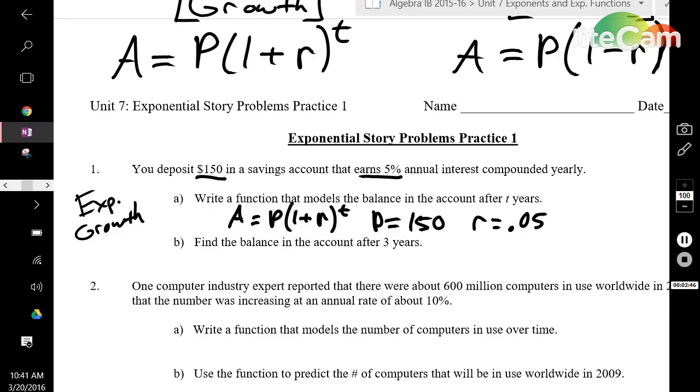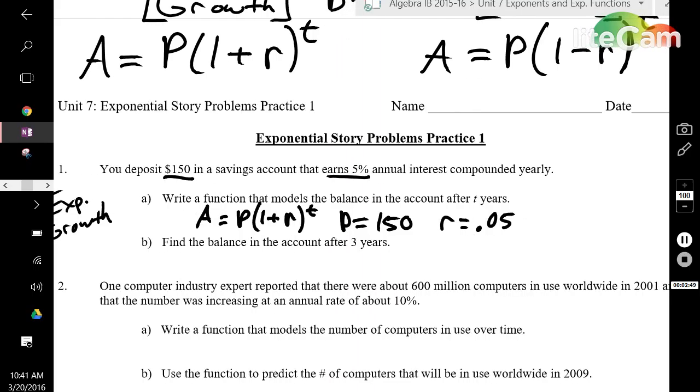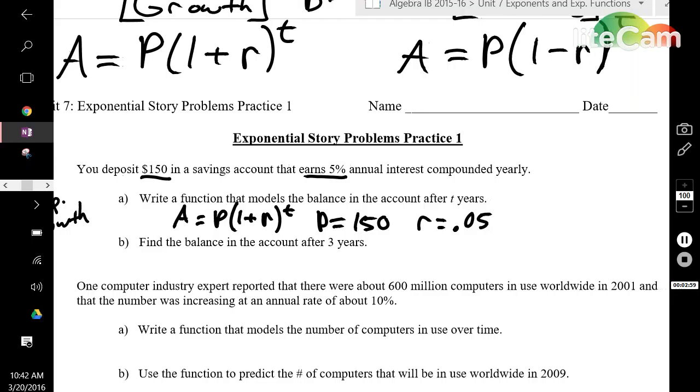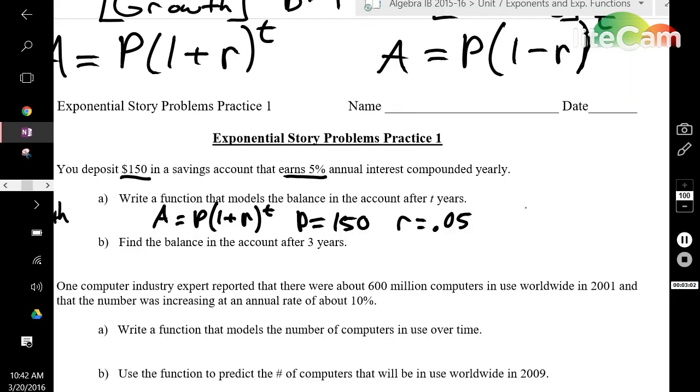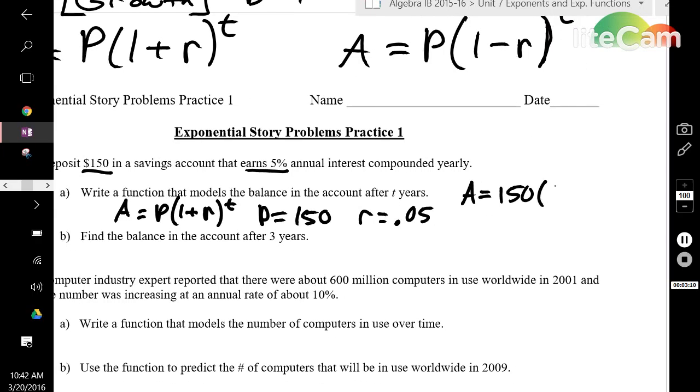They do not give us t in part a. When I ask you to write a function that models the balance in the account after t years, you need an exponential function with a t variable that's not plugged in yet. So plug in the values you do know: A equals 150 times (1 plus 0.05) to the power of t. That ends up being 150 times 1.05 to the power of t. It's important to look at the b value, 1.05, which is larger than 1, making it a growth function.